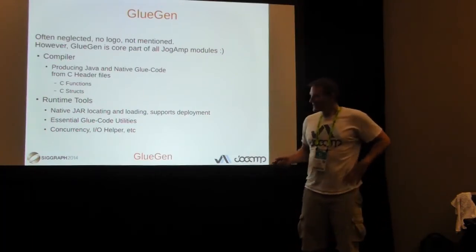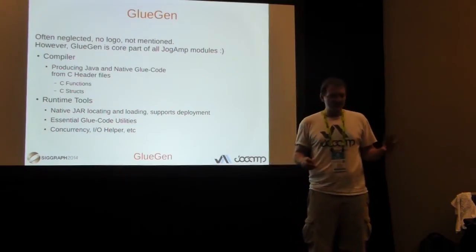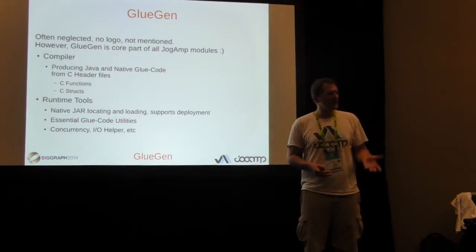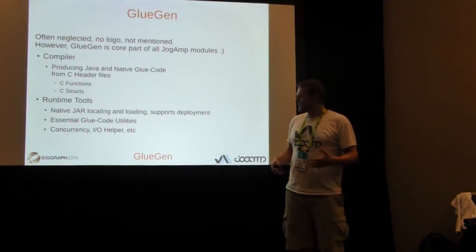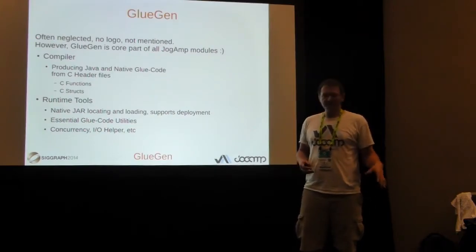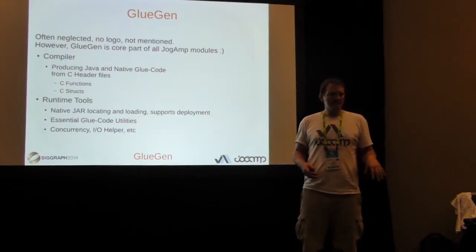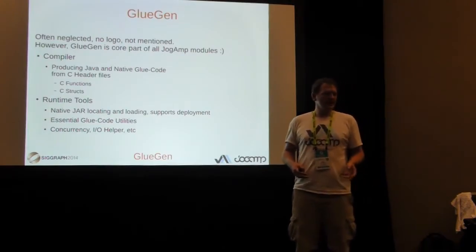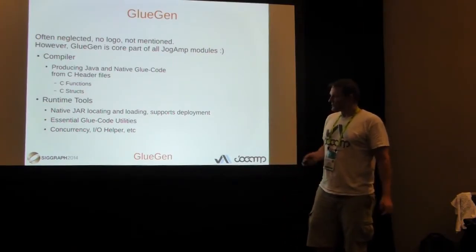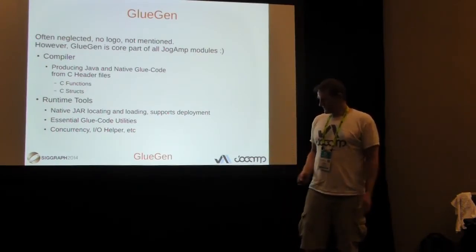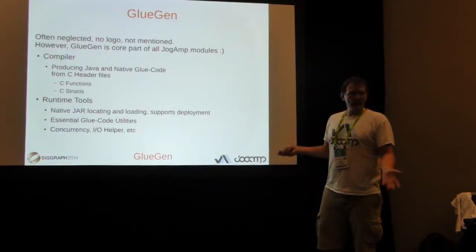We have runtime tools in BlueGen. Previously we relied on WebStart for native jar locating and loading, but that didn't work well across platforms. So we created our own solution, deriving native jar locations from the Java jar file base URL, and we can also hook into the classpath to find native libraries — though that's not recommended for performance. BlueGen provides utilities for determining bit sizes, integer sizes, concurrency helpers, IO helpers, and lets you query the native platform.